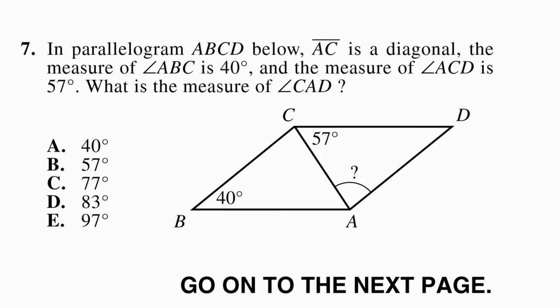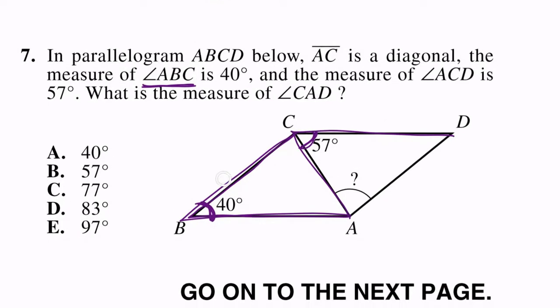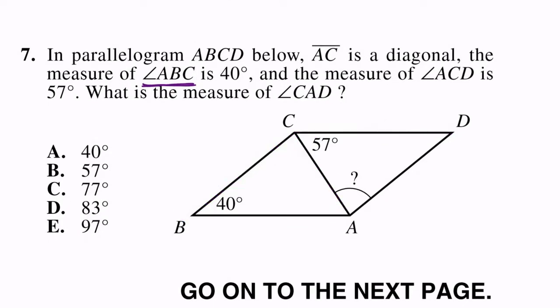Number 7, in parallelogram ABCD below, line AC is a diagonal. The measure of angle ABC is 40 degrees, and the measure of angle ACD is 57 degrees. What is the measure of angle CAD? Before we go any further with this question, it's important to note that anytime we see something like this with angle ABC, they're really talking about the middle letter. So they're talking about angle ABC, right here, but they're really asking what the measure of that angle is. So ACD, that would be from here to here to here, but they're really talking about this measure. So that's one thing to note before we move on.